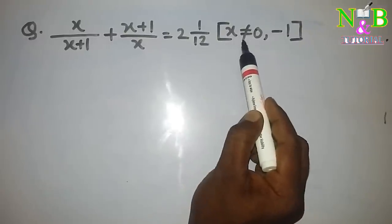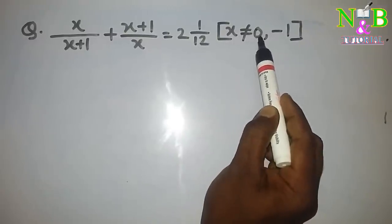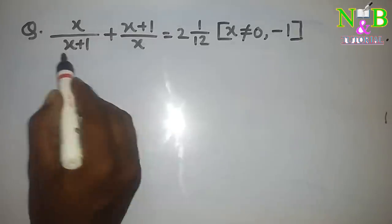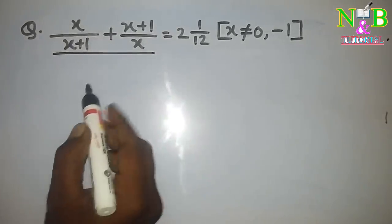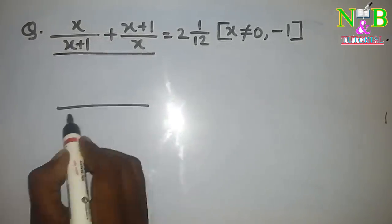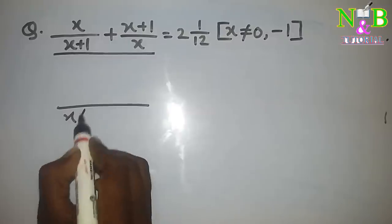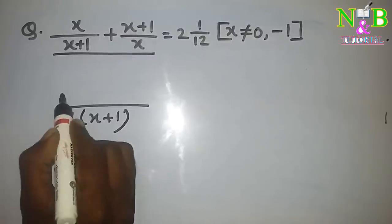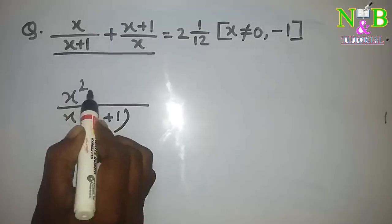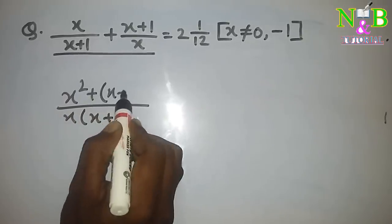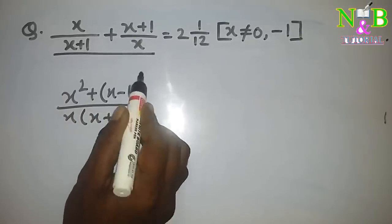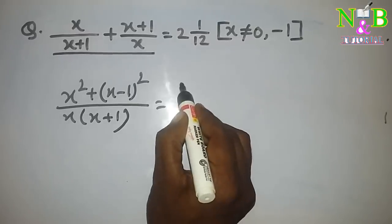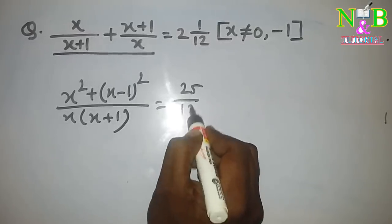x is not equal to 0 or minus 1. Next, consider 1 times x into x plus 1 times x squared plus x plus 1, whole squared equal to 512.